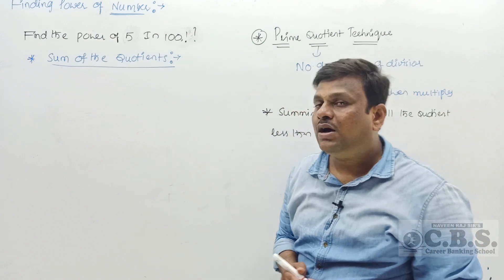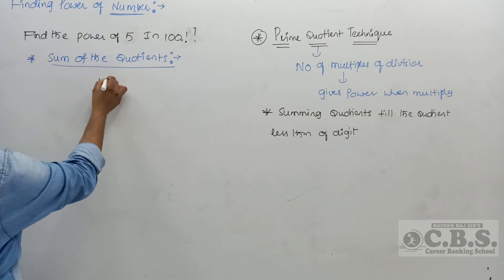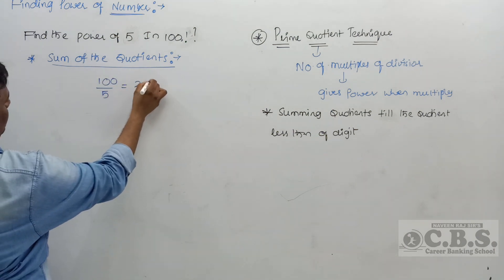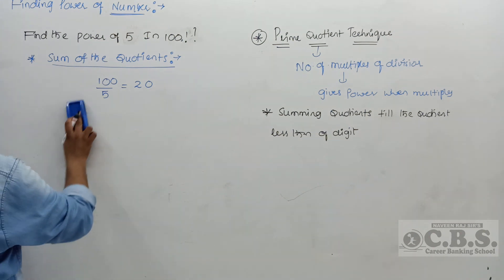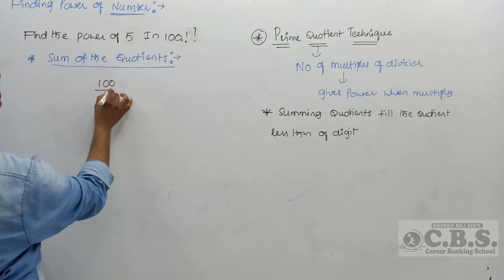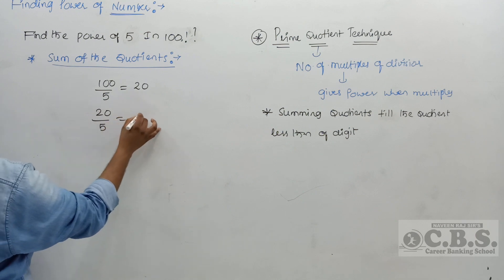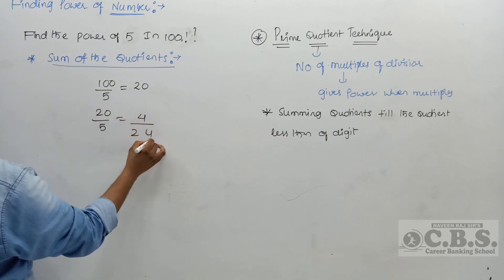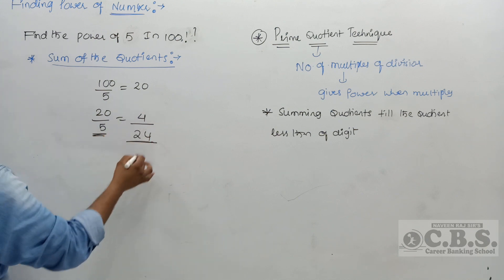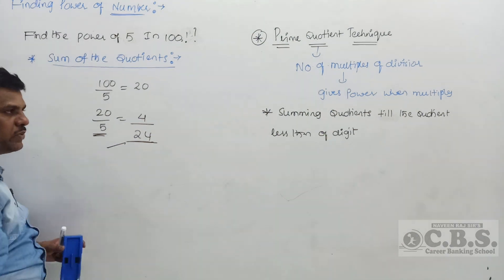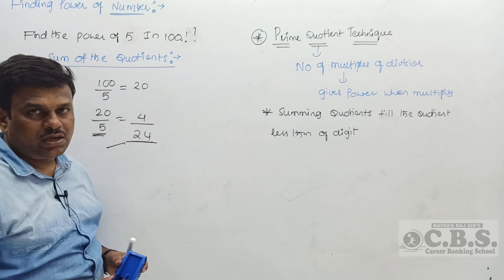Find the power of 5 in 100!. 100 ÷ 5 = quotient 20; 20 ÷ 5 = quotient 4. Since 4 is less than 5, we stop. Summing: 20 + 4 = 24. So the power of 5 in 100! is 24.